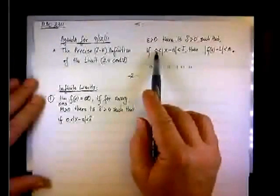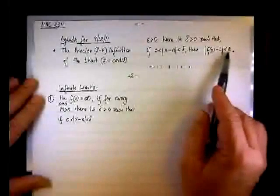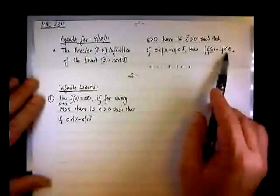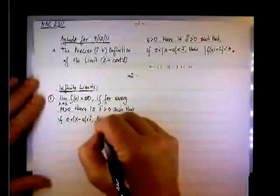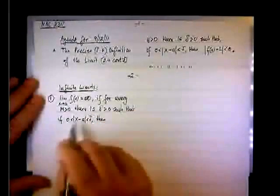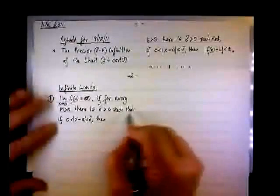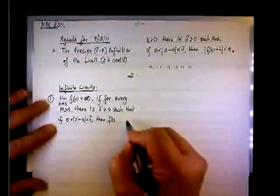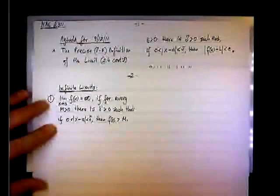If you recall, we started and said if x minus a is positive but less than delta, then f of x minus l is less than epsilon. Here we are going to vary that. We are going to say that if we can find delta such that f of x is greater than m, then we have limit at infinity.